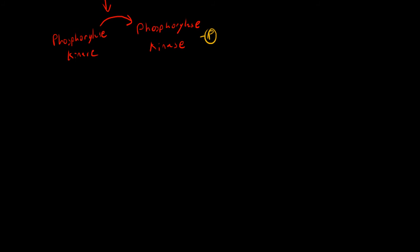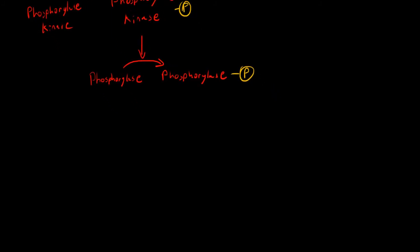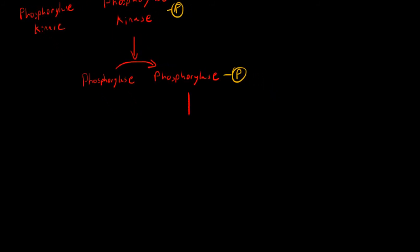So far we have ATP being cyclicized to cyclic AMP, activation of protein kinase A, which activates phosphorylase kinase. Phosphorylase kinase, as the name might imply, is going to phosphorylate phosphorylase.